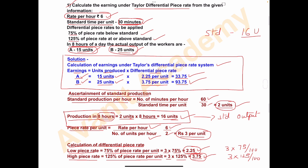This is how you find out the earnings of workers under Taylor's Differential Piece Rate System. I hope you got the solution. If you have any doubts, please write in the comments. For more such videos, please like, share, and subscribe to my channel. Thank you everyone.